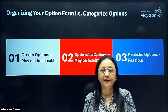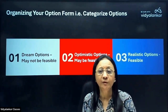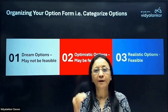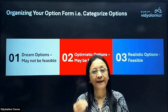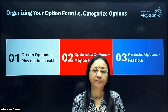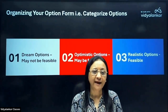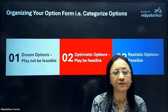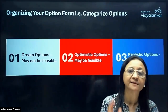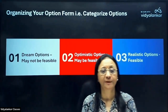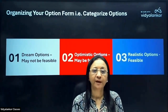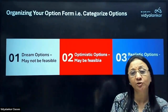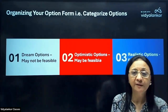One thing you need to note is: arrange or categorize your options as dream options — which may not be feasible but have them at the top — and then optimistic options, which may be feasible.